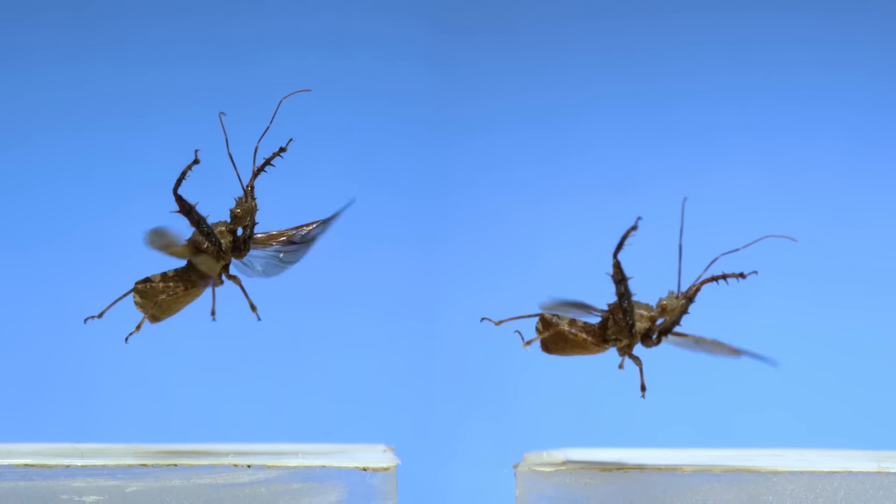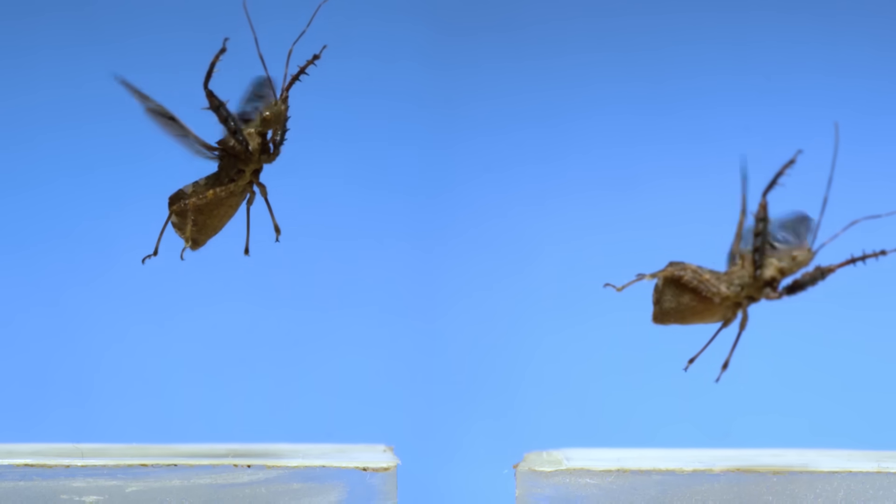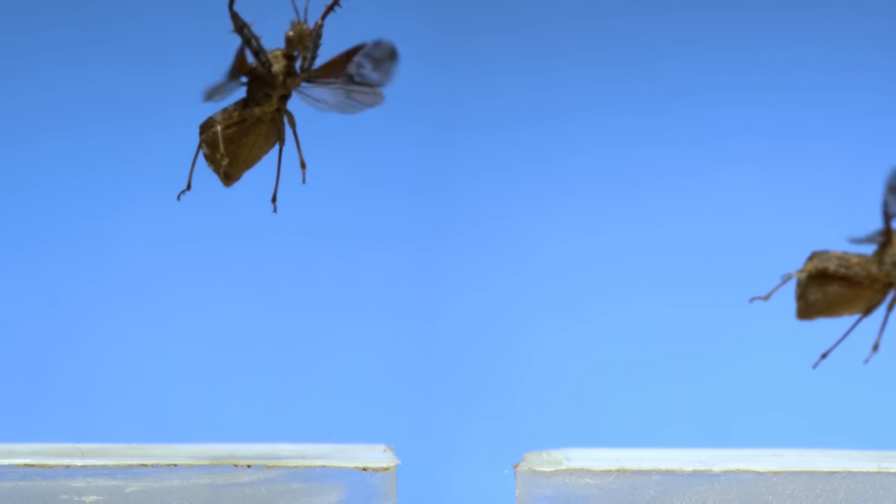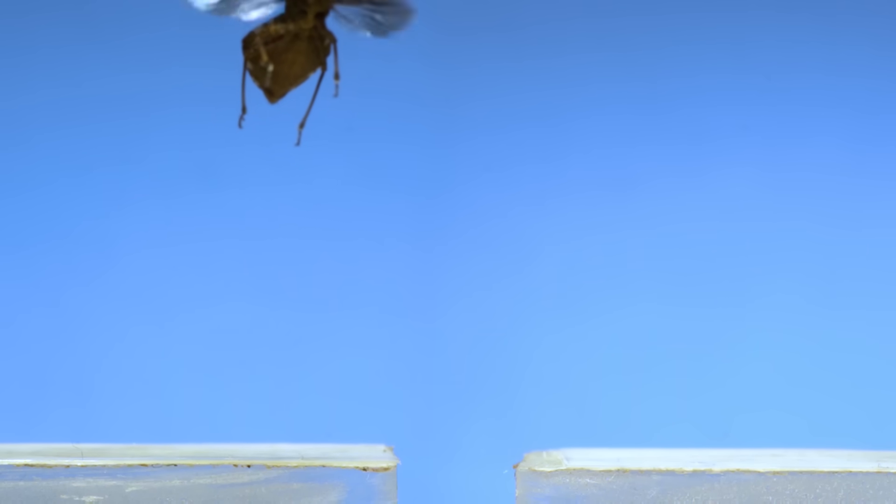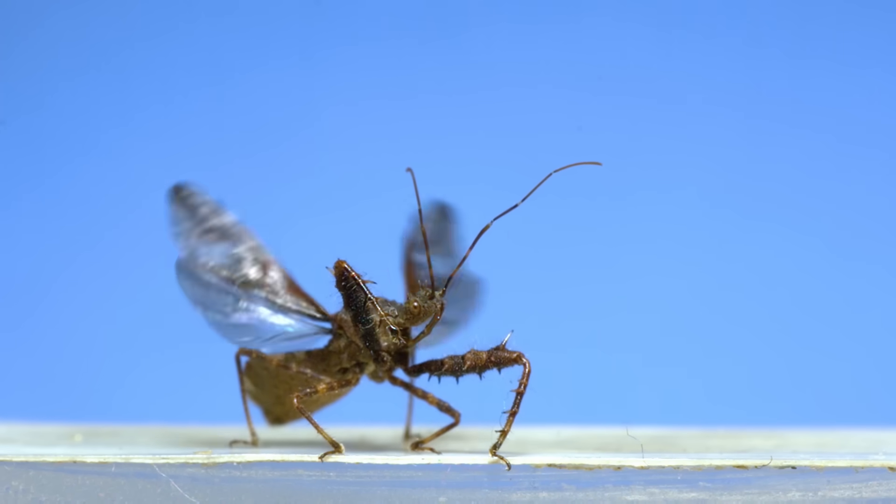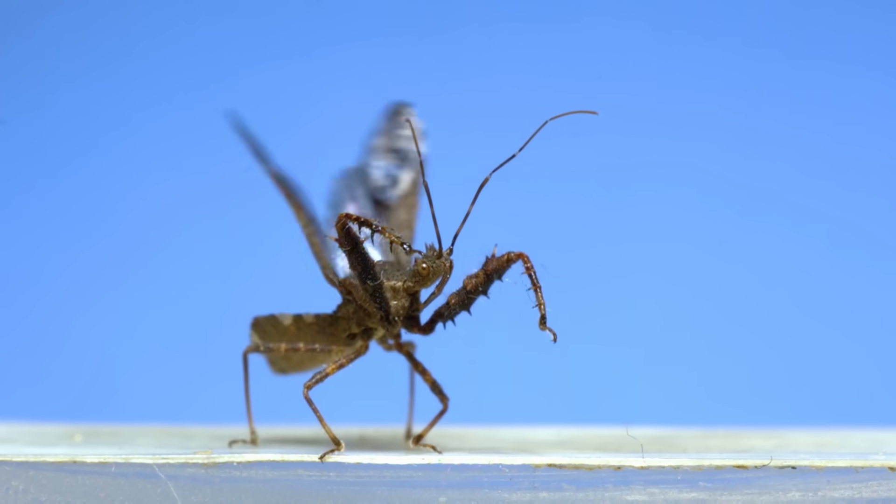The front legs, which are thickened and spiked, are used to grab and hold onto prey. In flight, they're held out in front of the body, like the bug is flying to pounce on the next victim. They just seem methodical compared to the rest of the insects in this video.